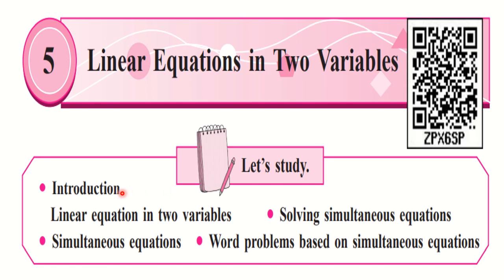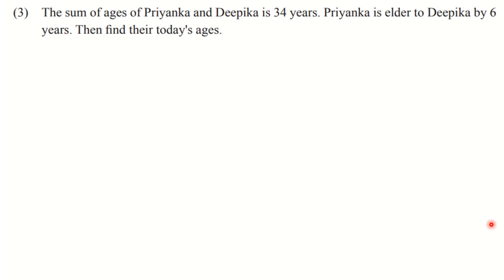In the previous lectures we have revised all the topics, and here we are now solving word problems based on simultaneous equations. This chapter is very small — only two practice sets are present. Practice Set 5.1 is revised, and we have also done the revision of the solved examples from the textbook. Please go through the solved examples because they are equally important and can be asked in the examination. We have started Practice Set 5.2 and completed two sums, so let us go further. We have completed two questions and now we are moving towards the third question.